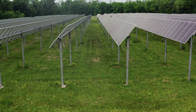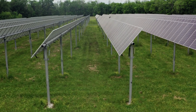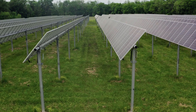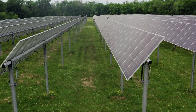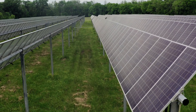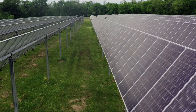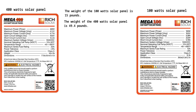11. Weight. The weight of the solar panel shows how heavy it is, helping in the selection of strong mounting materials. The weight of the 100-watt solar panel is 15 pounds, and the weight of the 400-watt solar panel is 49.4 pounds.